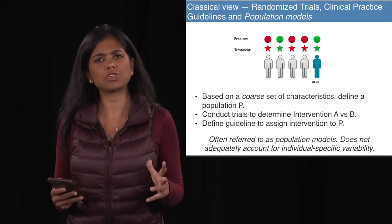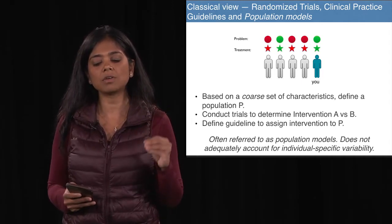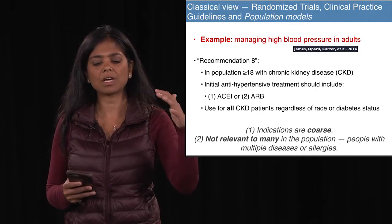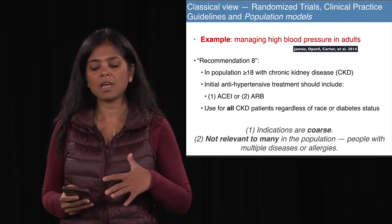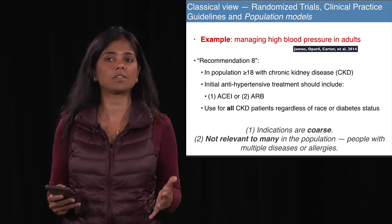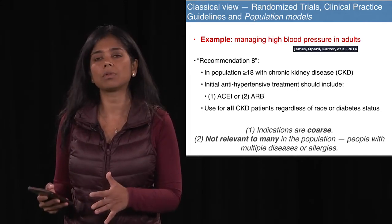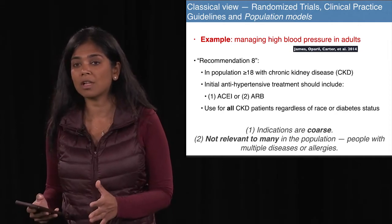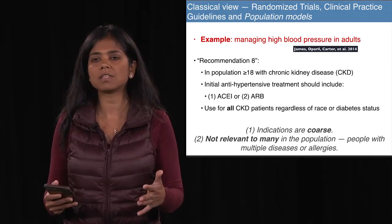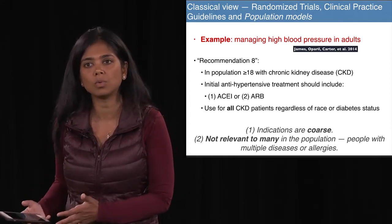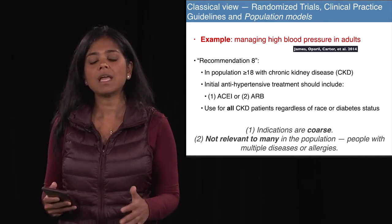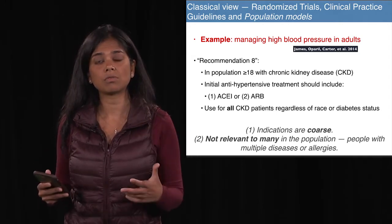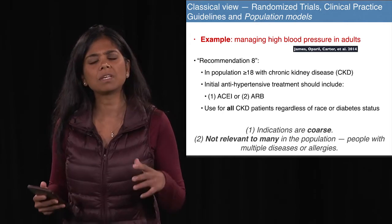We're going to refer to these as population-based models because they don't capture in great granularity individual-specific variability. A simple example is managing blood pressure in adults — patients may have a collection of chronic diseases or specific treatments that allow you to exclude them. It is often the protocol in these trials to exclude people who are complicated: those with multiple chronic conditions, people on medications with strong side effects, or medications that might interact with the protocol. But in reality, when a clinician is trying to make a decision for any person in front of them, they don't have the option to exclude.